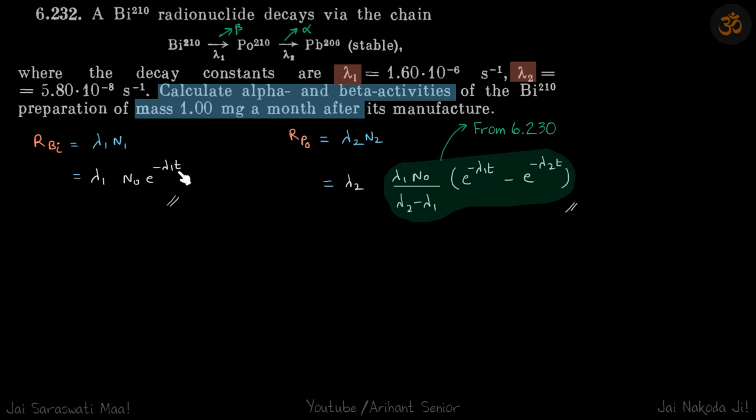And for the intermediate particle, we have seen in problem 6.230 that number of nuclei left is given by this formula. So activity of polonium will be lambda 2 times n2, which will be this. And this is stable anyway, so nothing is getting emitted here.